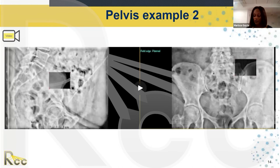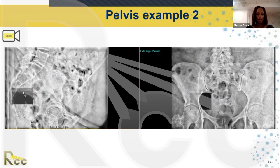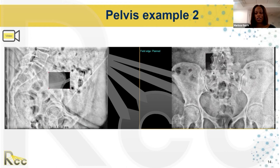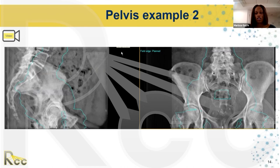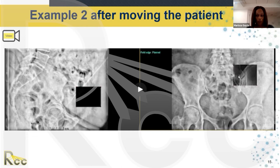We have another example, Pelvis Two. Playing it — the therapist is checking the sacrum and lumbar spine, checking the pubic symphysis, and there's a slight superior-to-inferior shift needed. On the AP film, they're checking the pelvic brim, the femoral head level, the spine, and the iliac crest. They then put on the actual contour — showing where we need to treat — and confirm everything that needs to be treated is within that blue contour.